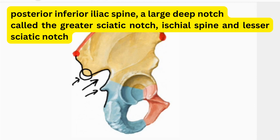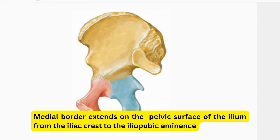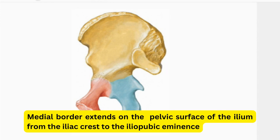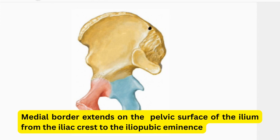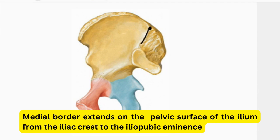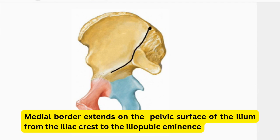Then you will find the ischial spine, and below the ischial spine there is a small depression known as the lesser sciatic notch. On the pelvic surface, a line extends from the iliac crest running downward to the iliopubic eminence, and it separates the iliac fossa from the sacropelvic surface.